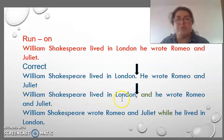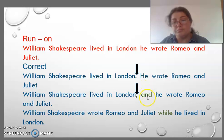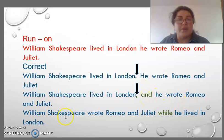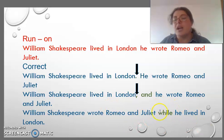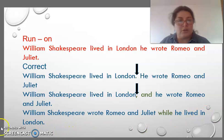'William Shakespeare lived in London,' — comma — 'and he wrote Romeo and Juliet.' Or: 'William Shakespeare wrote Romeo and Juliet' — using a subordinator — 'while he lived in London.'